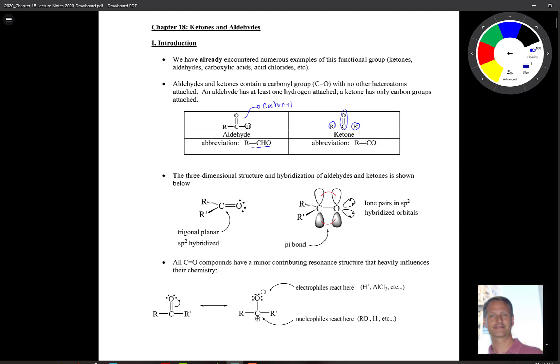Now when we look at the structure of the aldehyde or the ketone, the carbonyl group in particular, we see that the carbon is sp2 hybridized. And don't forget that means that it's trigonal planar.